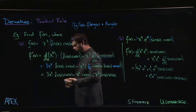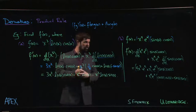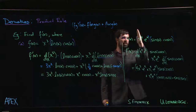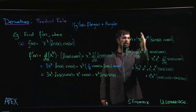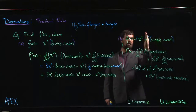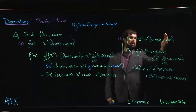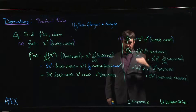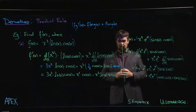In general, no matter how many factors you have in your product, you just work your way through differentiating one at a time: first derivative times the other three, second derivative times the other three, third derivative times the other three, fourth derivative times the first three. You get those four terms, add them up, and you're done.